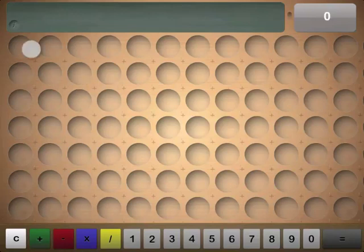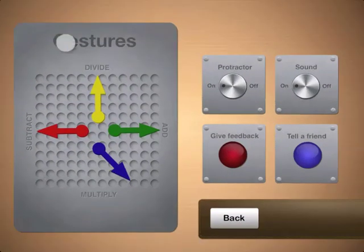If you would like to change the settings, you can simply tap the info button on the upper left and this will take you to the back of the board. Here you can turn the sound effects on or off and do the same with the protractor.